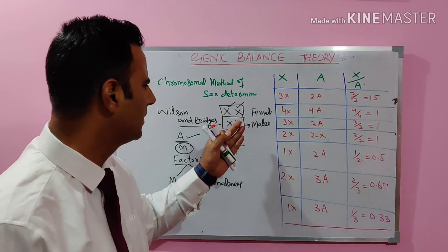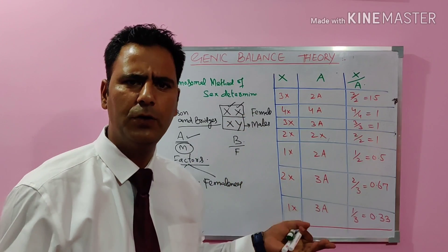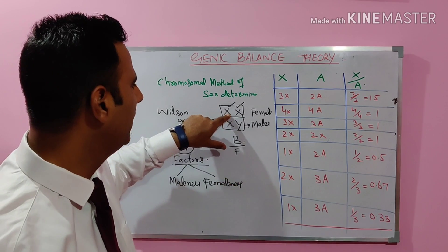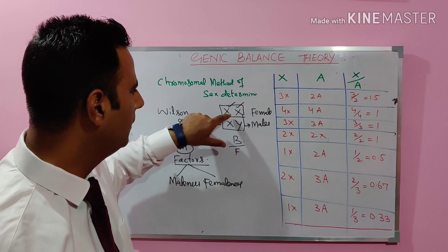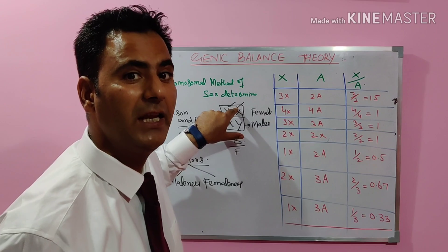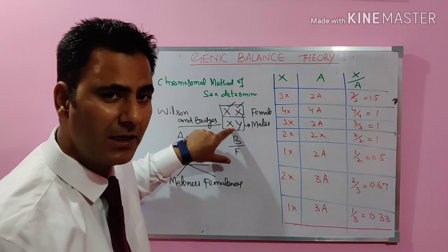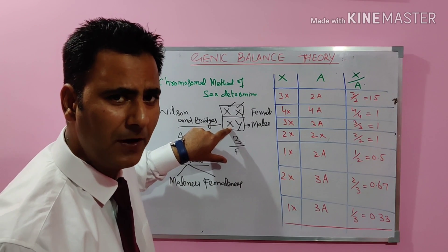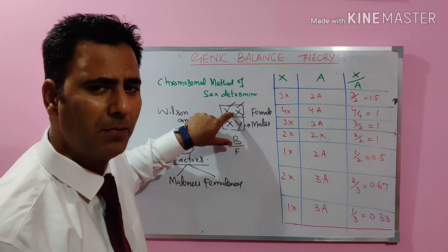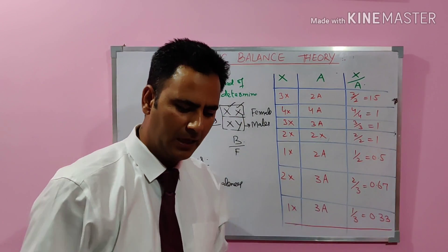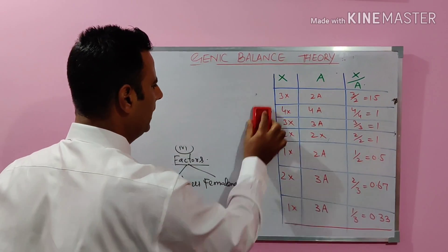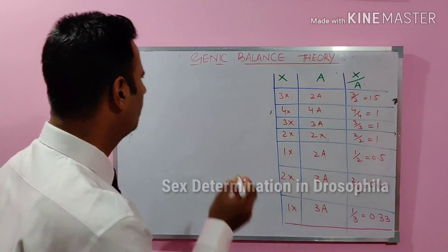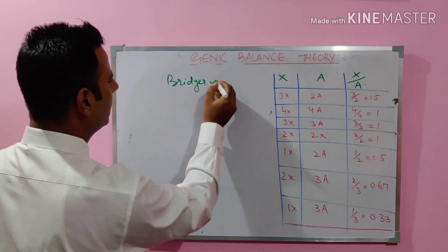We have mechanisms like XX and XY. XX is a female and XY is a male. In XX, the genes governing femaleness are overweighed, and in XY, the genes governing maleness are overweighed. This was experimentally proved by Bridges in Drosophila.